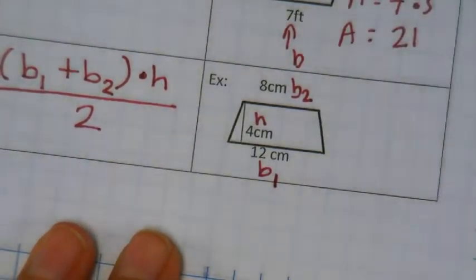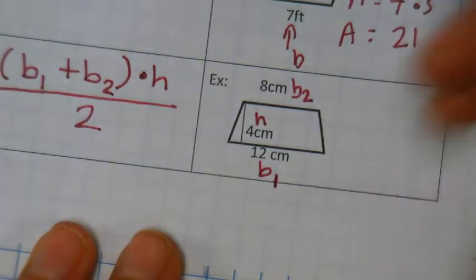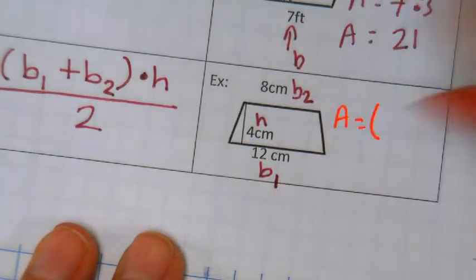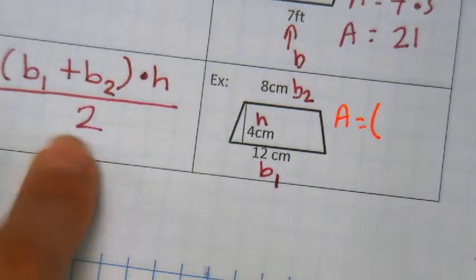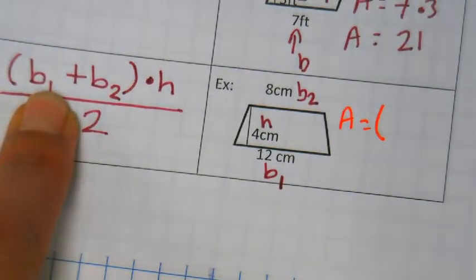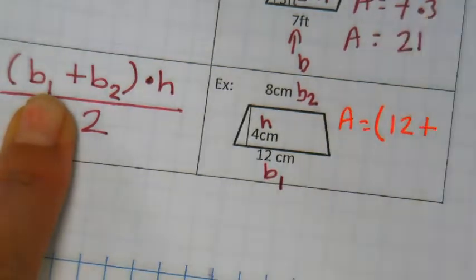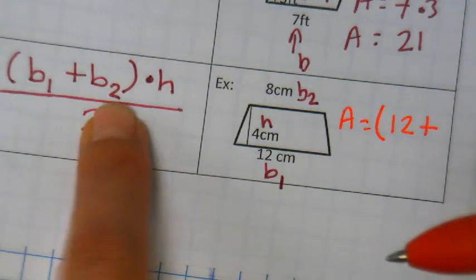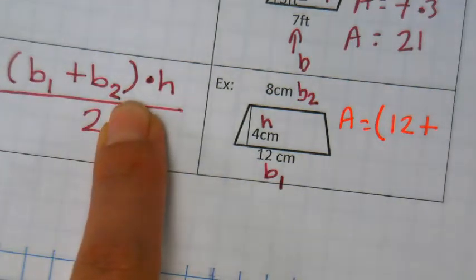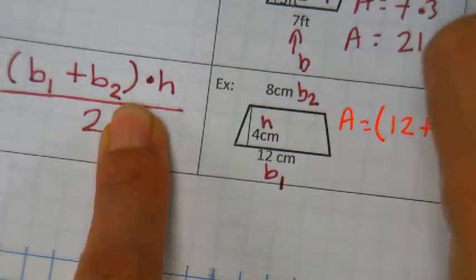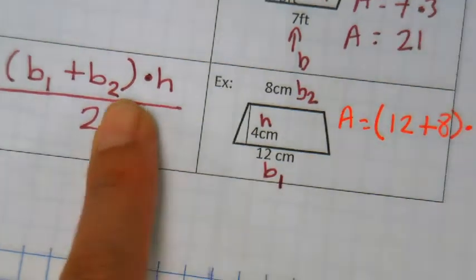So now let's plug in our numbers. Area is equal to — what number represents my base one? 12. Plus, which number represents my base two? 8. Times, what's my height? 4.